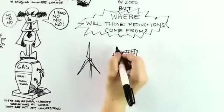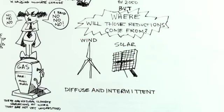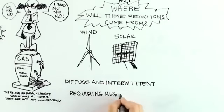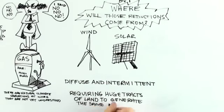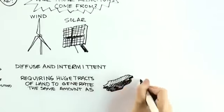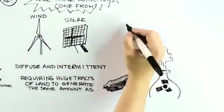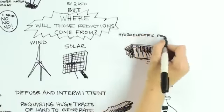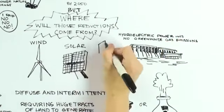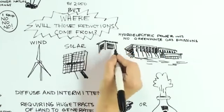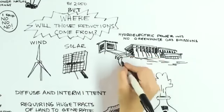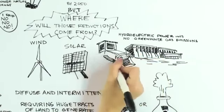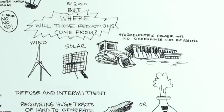Solar and wind are two diffuse and intermittent forms of energy, requiring huge tracts of land to generate the same amount of energy as a single coal-fired or nuclear power plant. Hydroelectric power is attractive since it has essentially no greenhouse gas emissions. Environmental concerns, though, are not only blocking the construction of new hydro dams, they are leading to the removal of some of the existing ones.